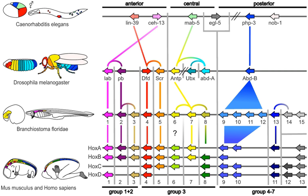In the so-called modern synthesis of the early 20th century, Ronald Fisher brought together Darwin's theory of evolution — with its insistence on natural selection, heredity, and variation — and Gregor Mendel's laws of genetics into a coherent structure for evolutionary biology. Biologists assumed that an organism was a straightforward reflection of its component genes: the genes coded for proteins which built the organism's body, and new species evolved through mutations in these genes.